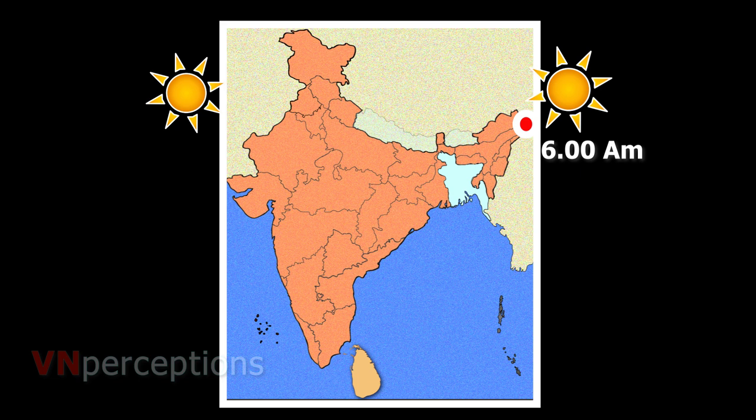Because the longitudinal extent of India is 30 degrees and we have seen that the earth travels 15 degrees in one hour. So for 30 degrees, it is going to be 2 hours. I can say that in terms of local time, there will be a difference of 2 hours. And we in India don't go by local time. We have a standard time.